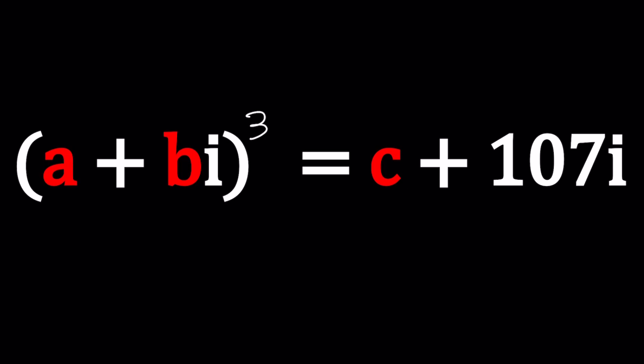I'll talk about AME, but we have A plus B I to the third power equals C plus 107 I. A, B, C are positive integers, and we're going to be solving for A, B, and C.